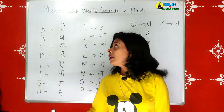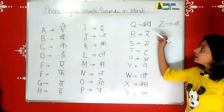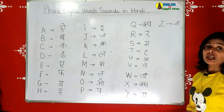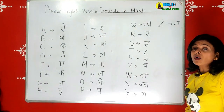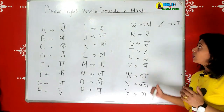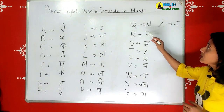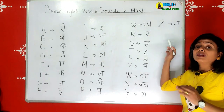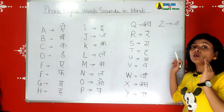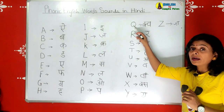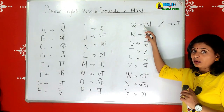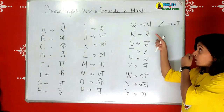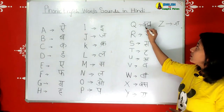Next we come to Q. Q is for queen. The Q sound - remember, Q is always followed by U. These pronunciations are very important.